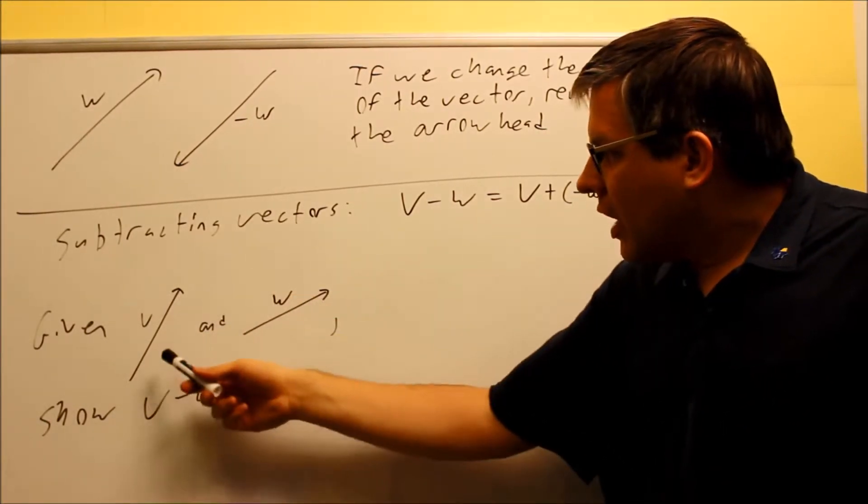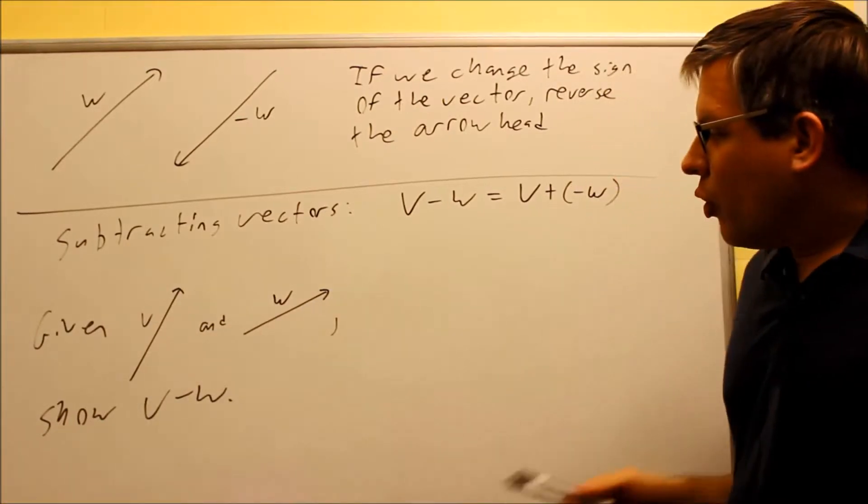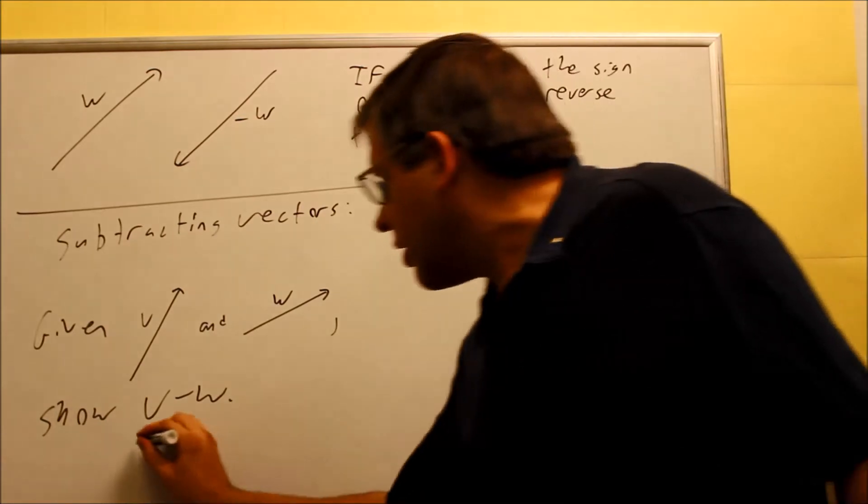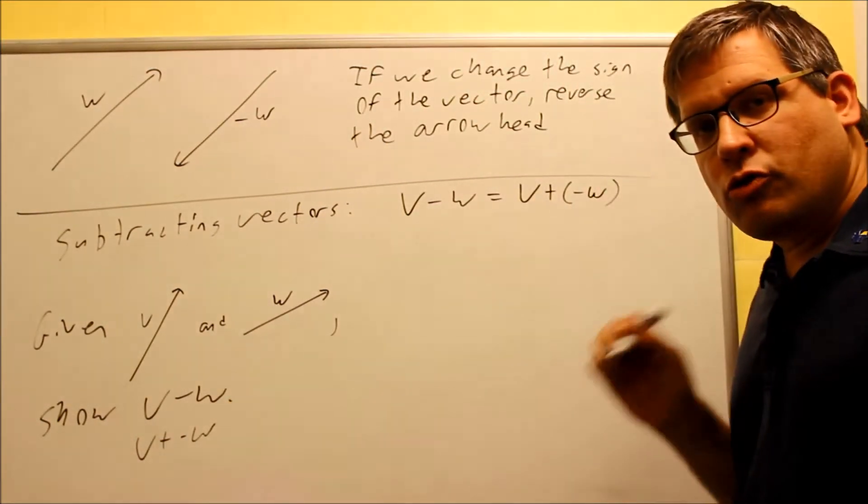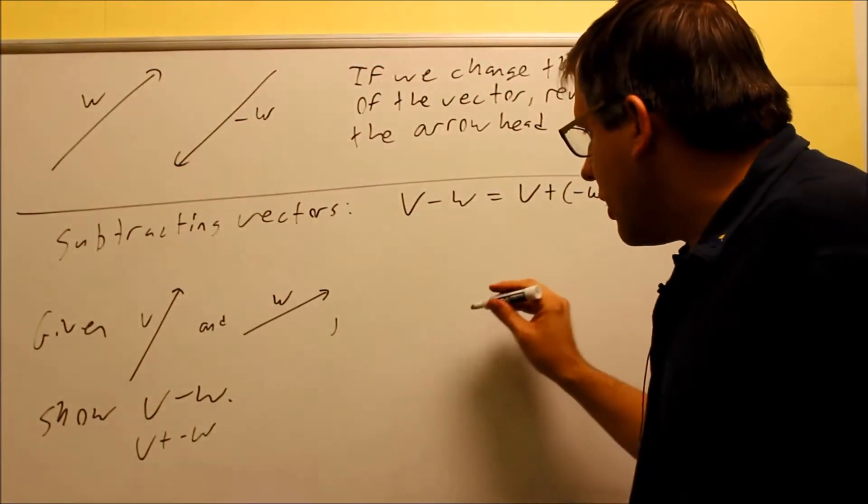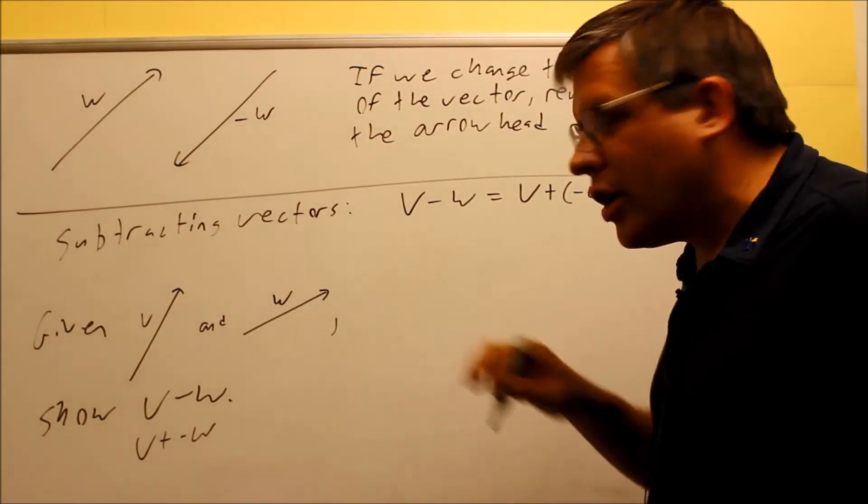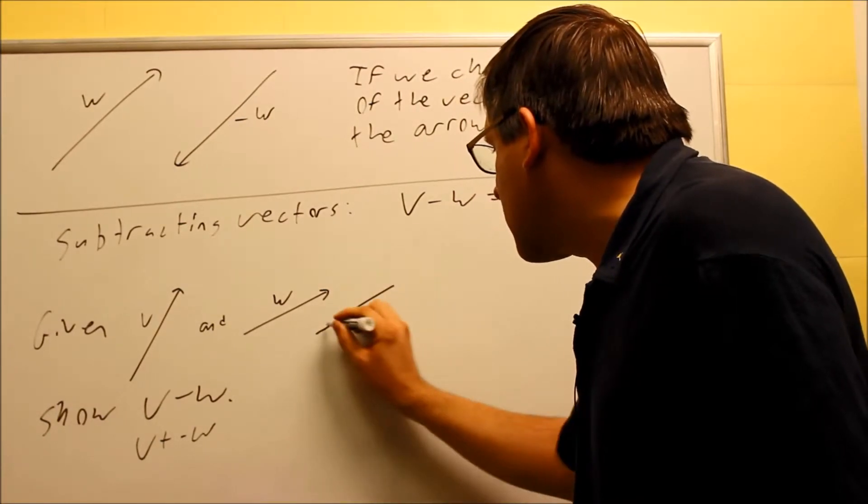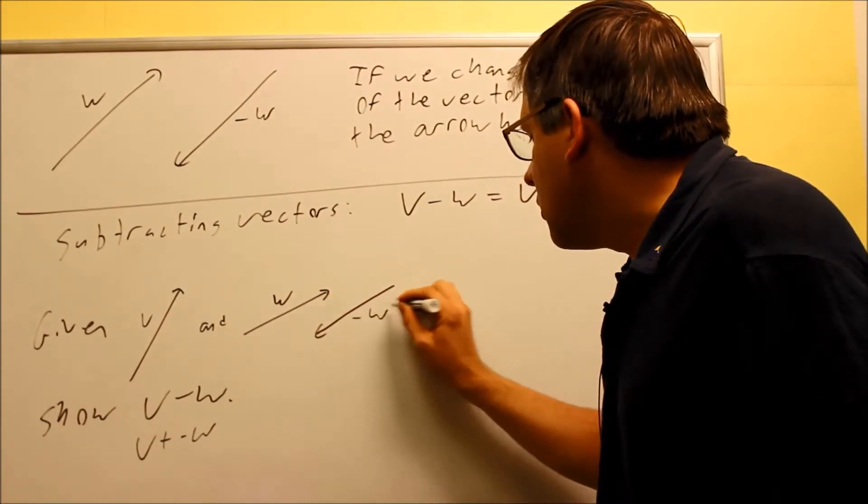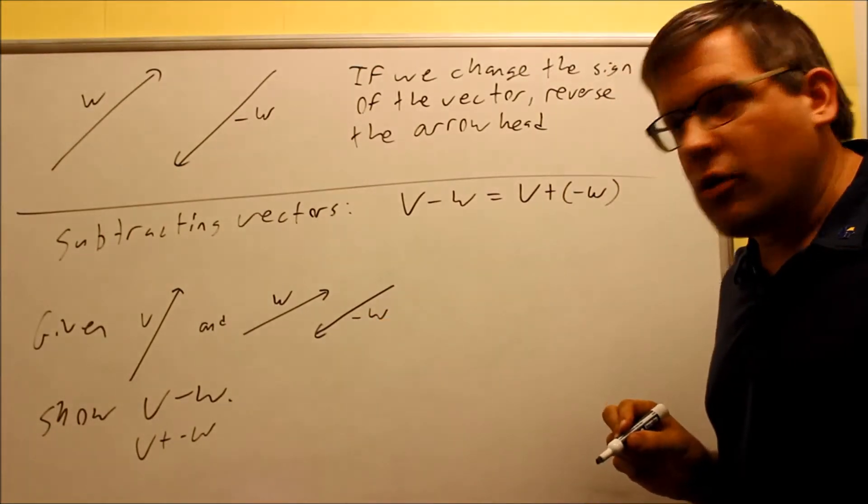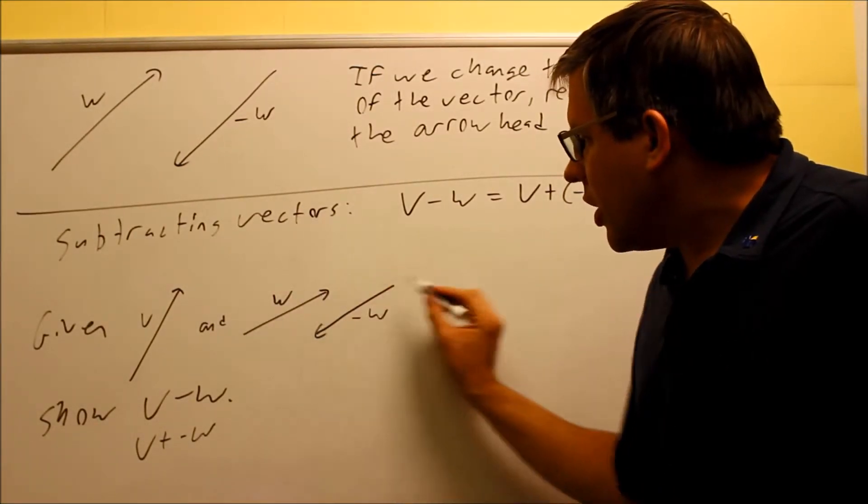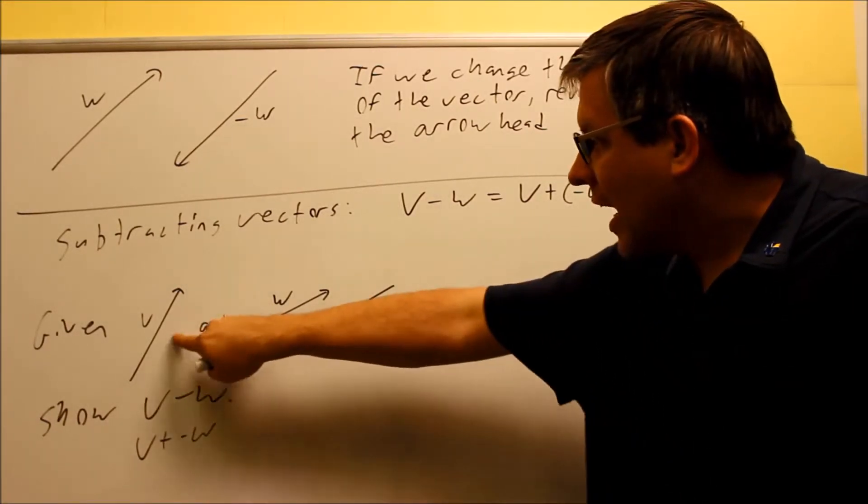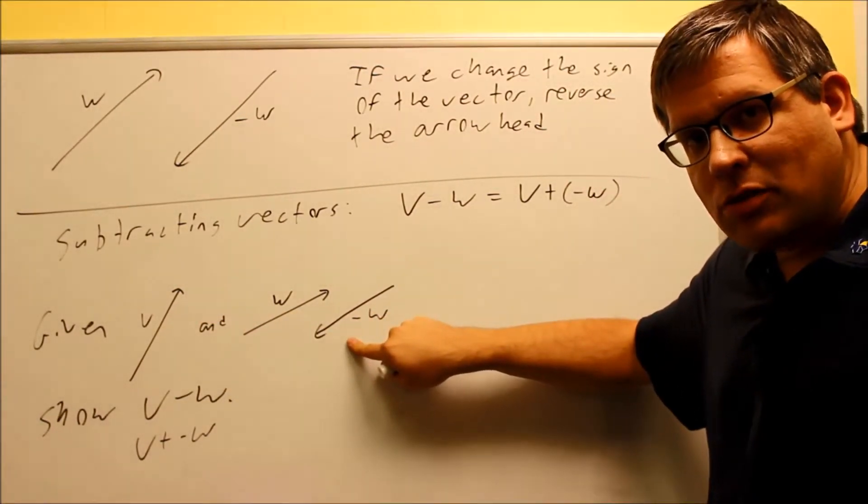Here's two vectors that they give you, V and W. We want to show V minus W. Technically, what we want to show here is V plus negative W is what we want to do. First of all, I have to understand what negative W is. Let me go ahead and draw that in right here. That's going to have the same slope, so same angle. We're just reversing the arrowhead. So W is given here. That means automatically I know what negative W is. Now I have to add this and this together, and I have to add them tip to tail.